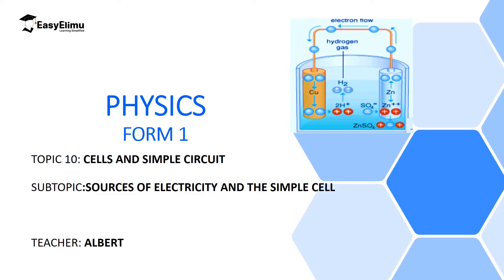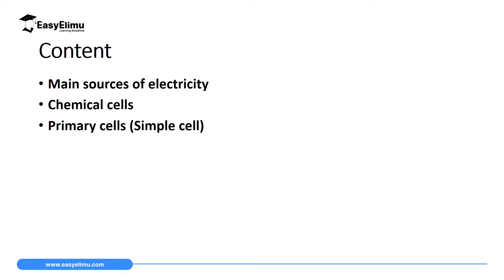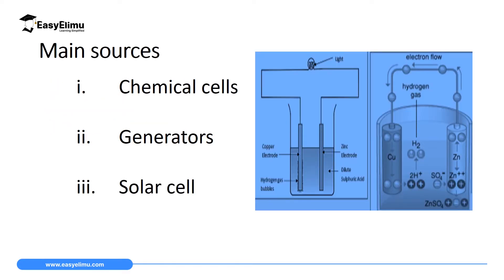My name is Albert. I hope you will enjoy the lesson. By the end of this lesson, I expect you to be able to describe the main sources of electricity, define a chemical cell, and discuss how a primary cell — in this case a simple cell — produces electricity.